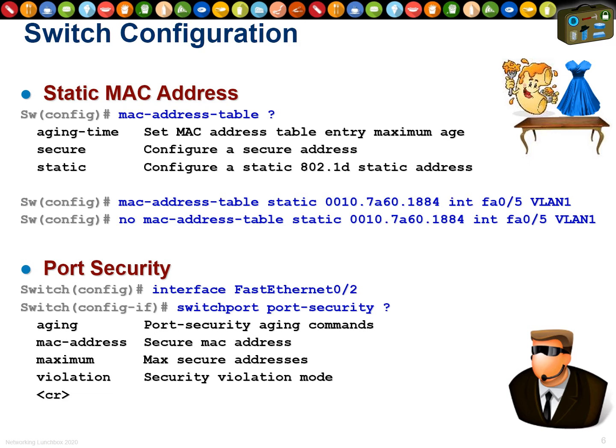You can spend half an hour typing 'switchport port-security aging', 'switchport port-security MAC address', 'switchport port-security maximum', and 'switchport port-security violation', and have all perfect commands — but if you forget to first type 'switchport port-security' and press enter, none of those commands do anything. You must enable port security first, then set up the parameters you want.